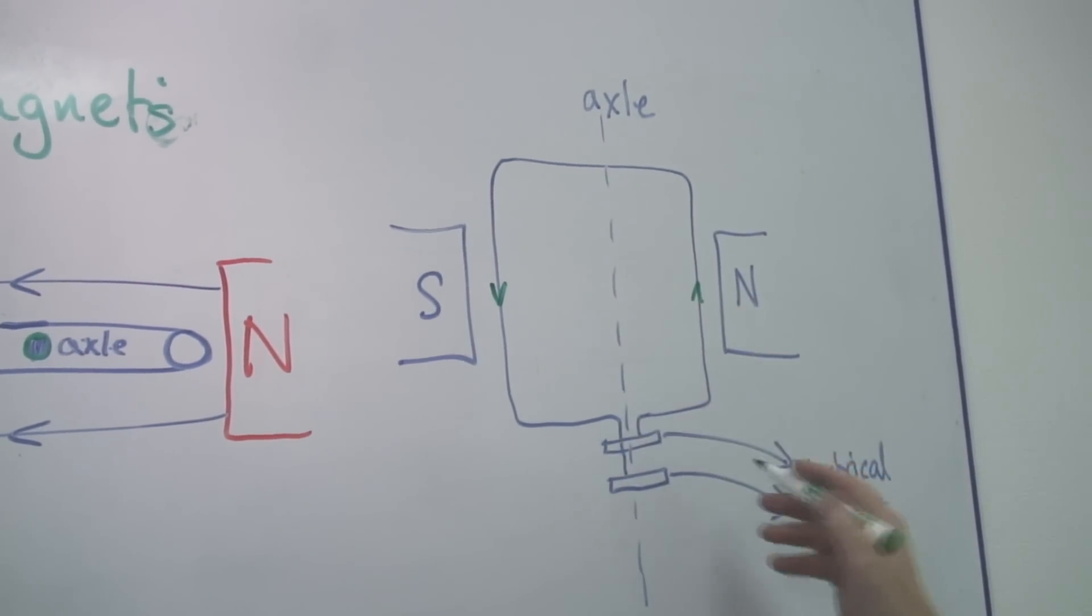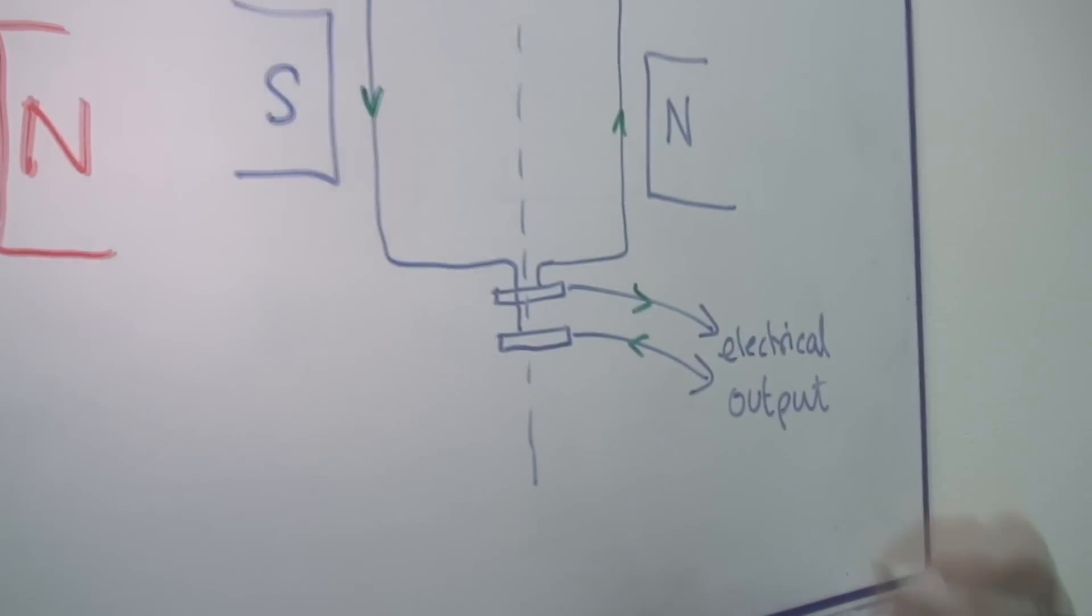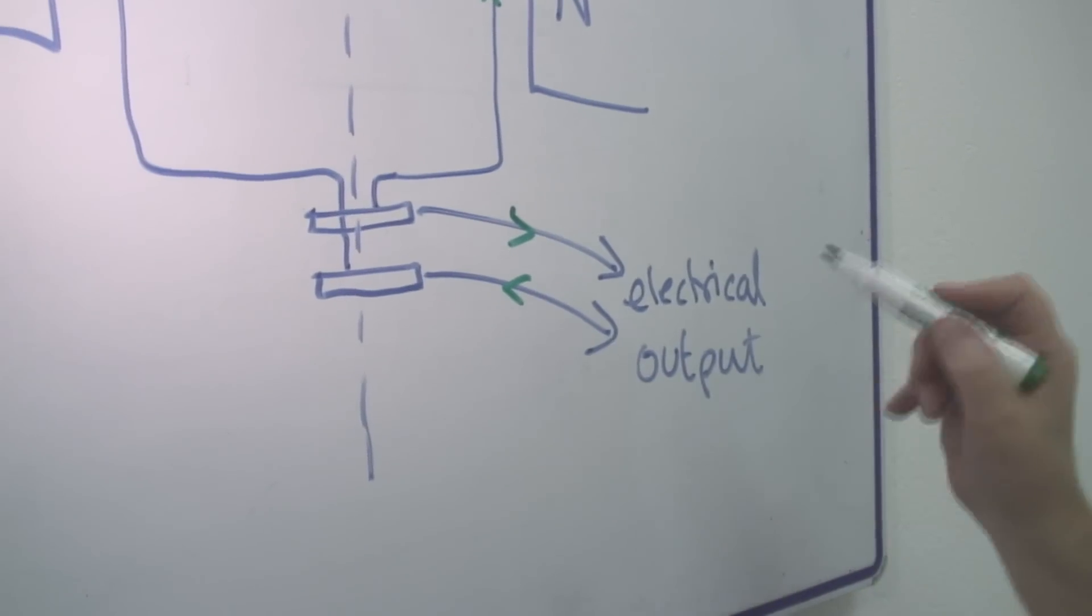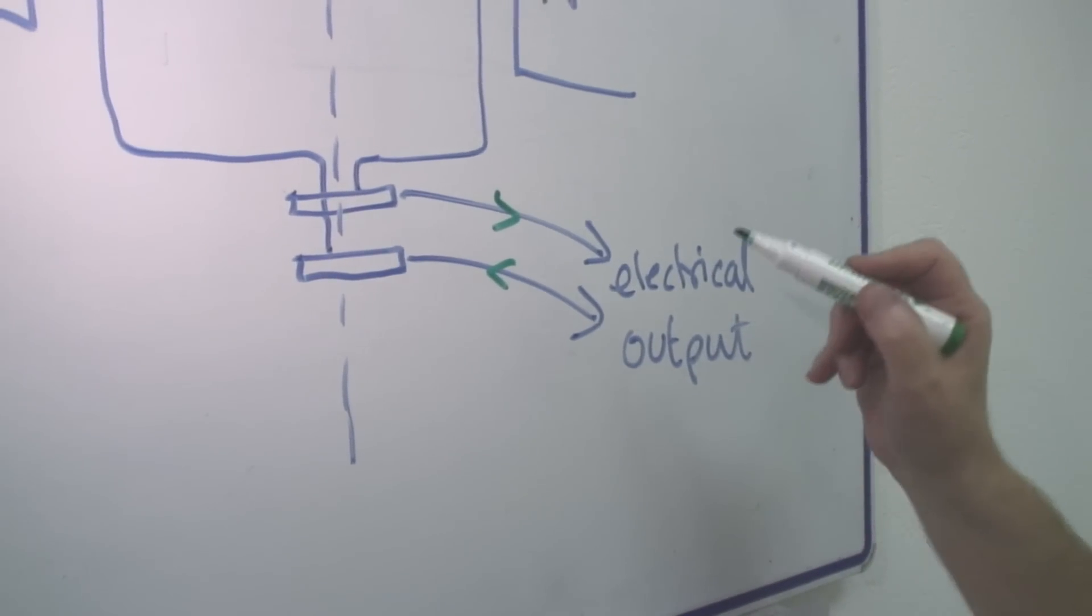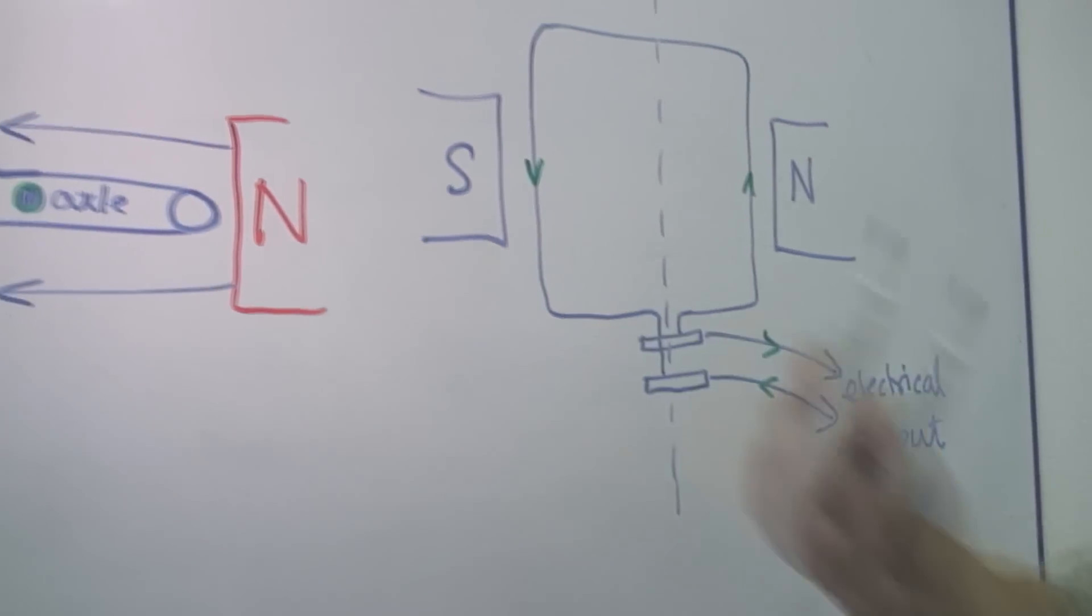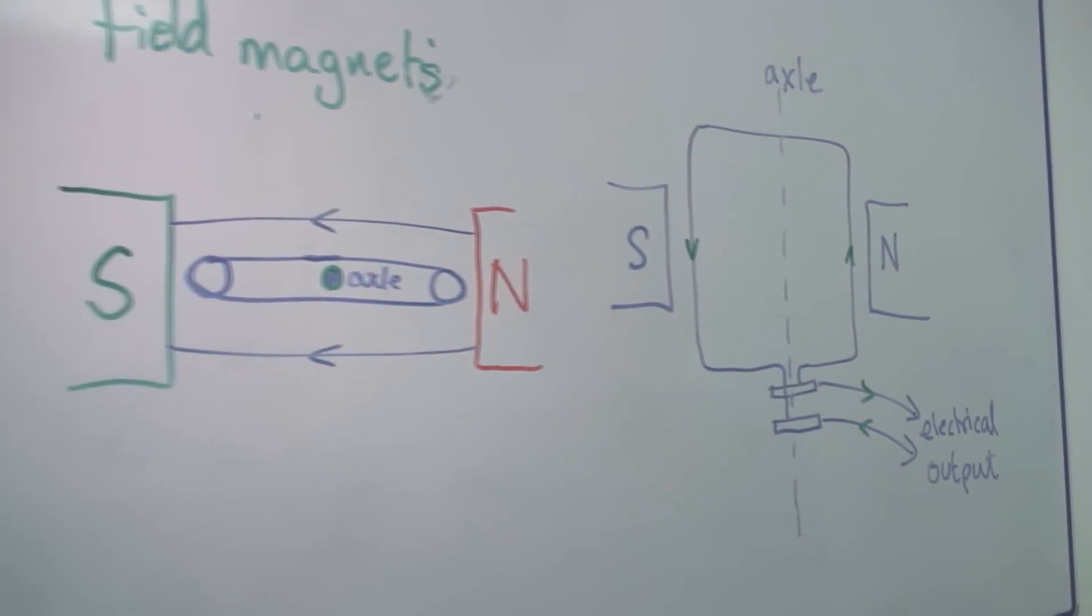And that electric current comes through this so that we get an electrical output. So whenever this wire cuts through this magnetic field, it generates an electric current.